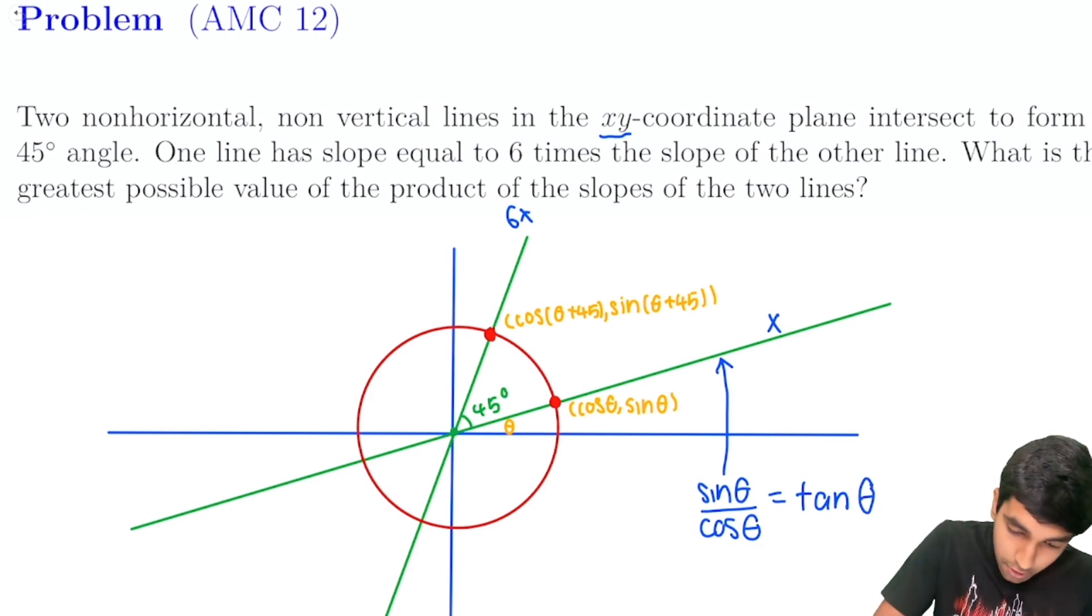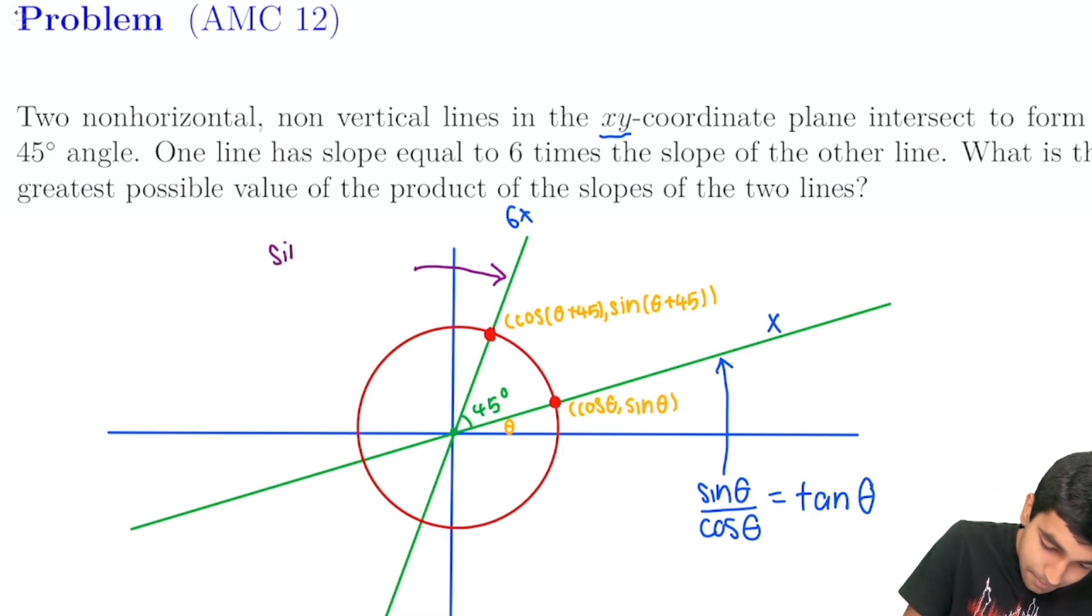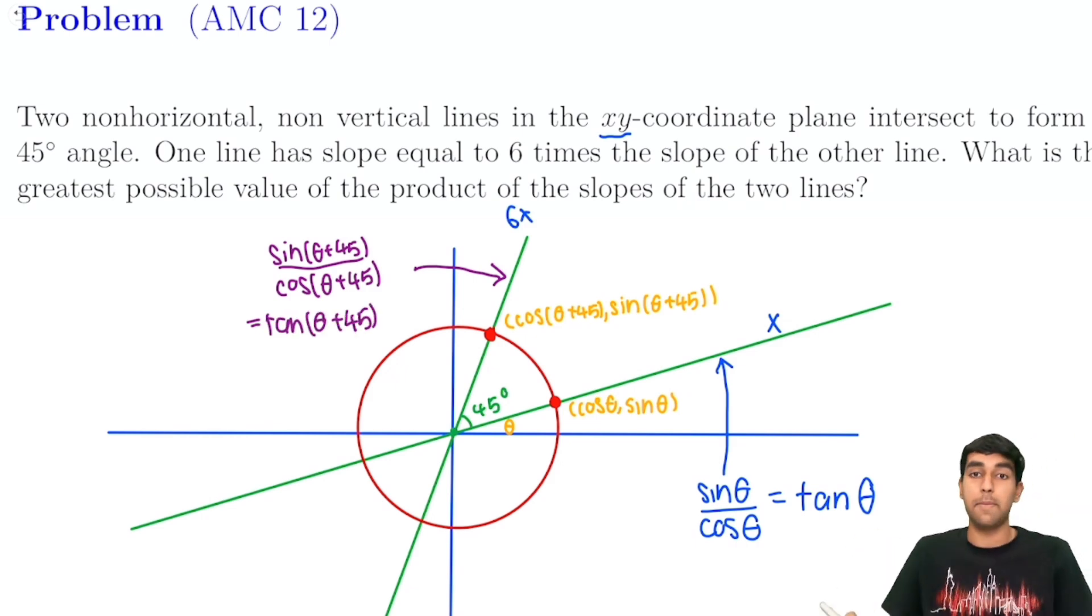So similarly, for our other line over here, we have that the slope is going to be sine of theta plus 45 over cosine of theta plus 45. So that is just going to be equal to tangent of theta plus 45. And in fact, you might notice this pattern. Whenever we have this kind of line and we know this angle, the slope is always just going to be the tangent of this angle.